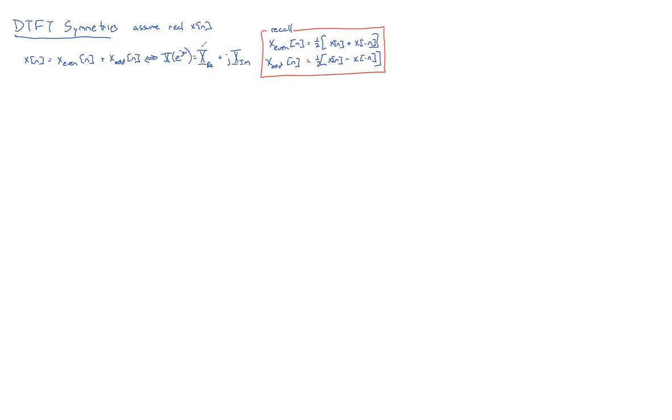Turns out that the real part is due to the even, and the odd part causes the imaginary. And once you realize that, the symmetry rules are really straightforward. The symmetry rules say that if you've got a purely even x(n), then your DTFT is going to be purely real.